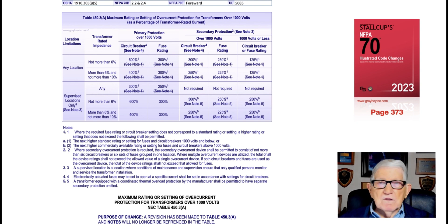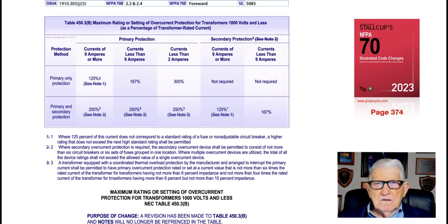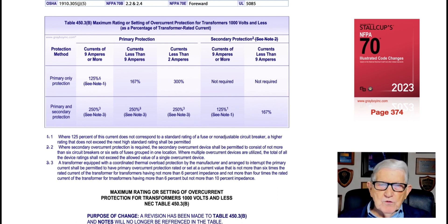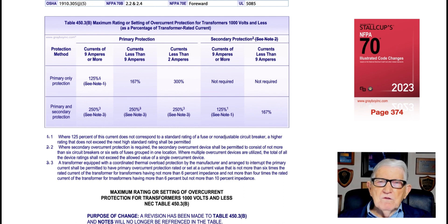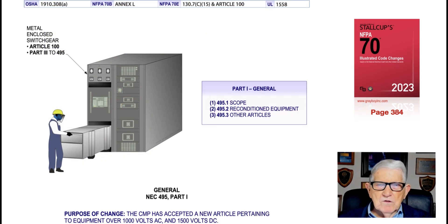Be very aware that there are changes in this table as well as the notes. This illustration deals with the maximum rating or setting of an overcurrent protection device for transformers 1,000 volts and less in accordance with new Table 450.3(B). The purpose of the change here was simply to delete the lettered notes and use numbers to reference the information below the table. That's what this revision is about — warning the user of the NEC what took place in Table 450.3(B).